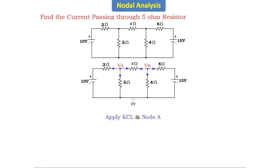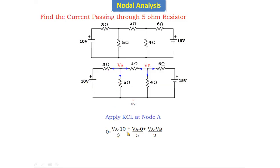Applying KCL at node A: the sum of all currents entering this node equals zero. Since I assumed all currents are leaving, entering current equals zero, and zero equals the sum of leaving currents. The leaving currents give us: (VA − 10)/3 plus VA/5 plus (VA − VB)/2.